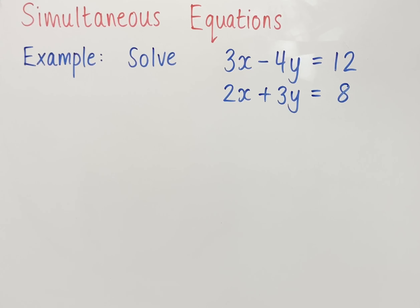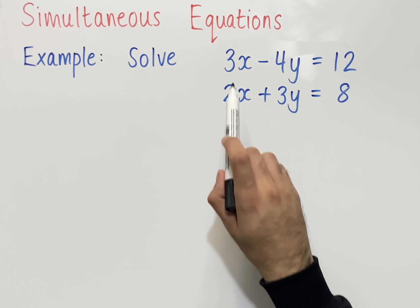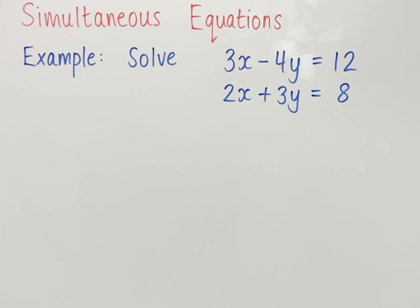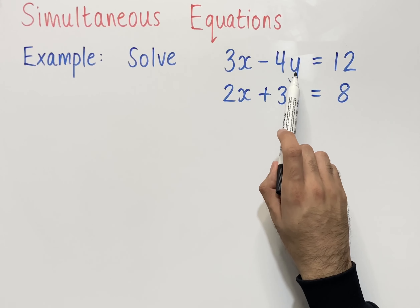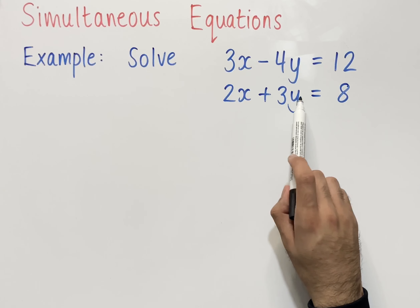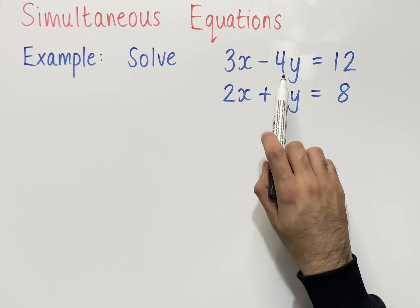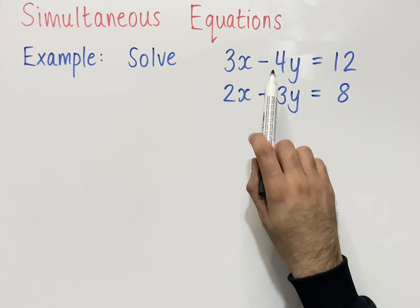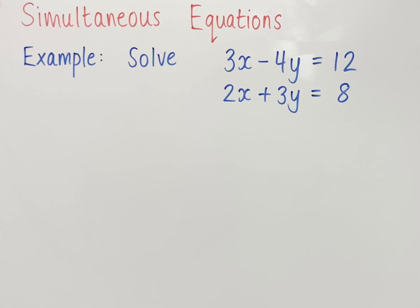In both equations, the number of x's are different and the number of y's are different. So we need to choose which unknown we want to eliminate. If we choose the y's, we look at the number of y's — ignoring the plus or minus signs — we've got 4 lots of y in the first equation and 3 lots of y in the second. We find the lowest common multiple of 4 and 3, which is 12.